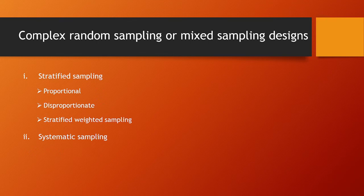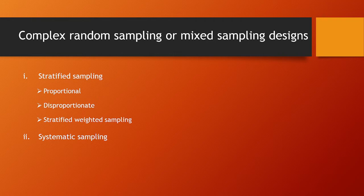This method is popularly used in those cases where a complete list of the population from which the sample is to be drawn is available. For example, if there are 100 people in the population, we can take an interval of 5.